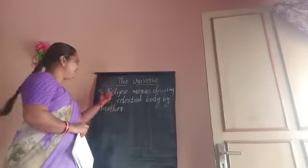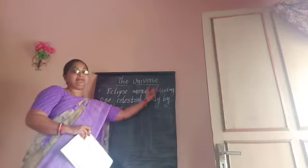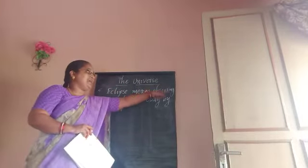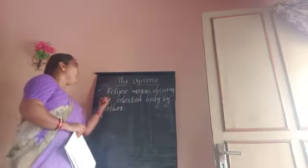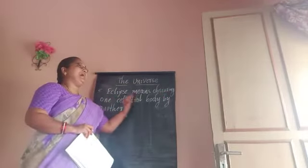Eclipse means obscuring — let's spell it out: O-B-S-C-U-R-I-N-G — obscuring one celestial body by another.